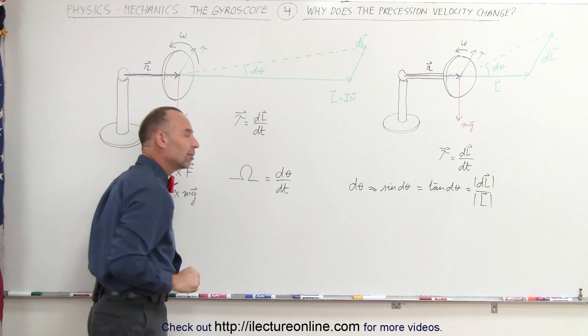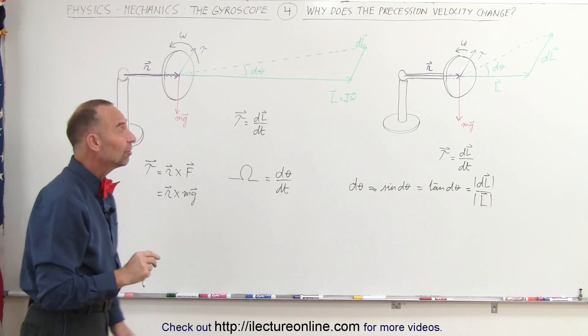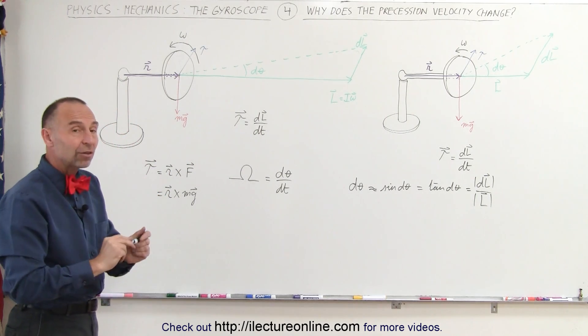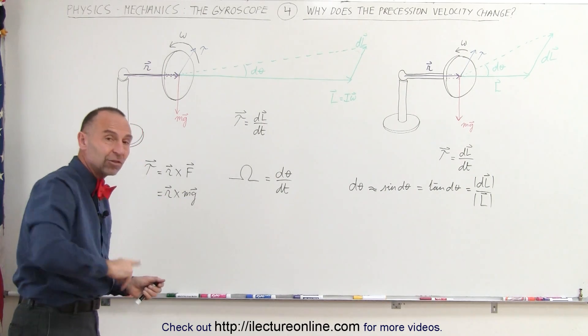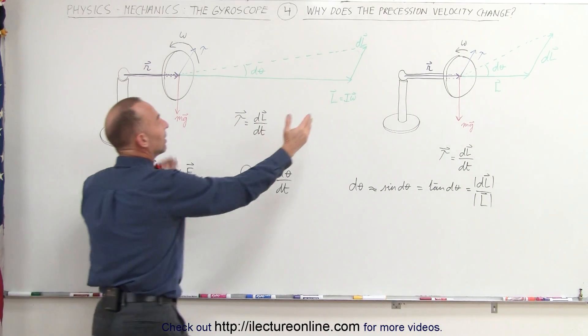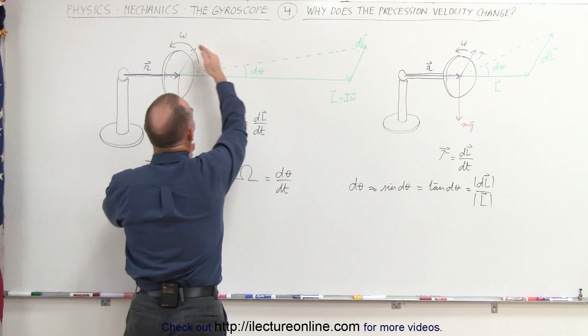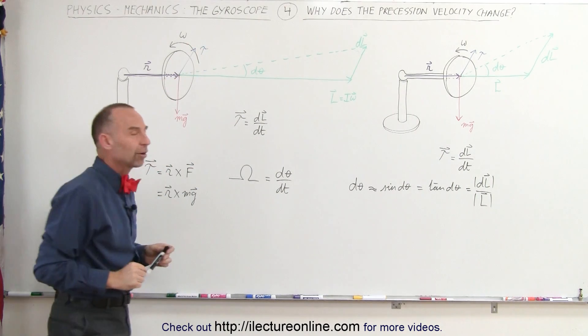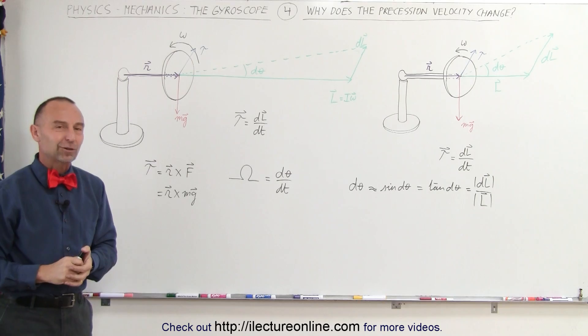And that's the reason why, when you have a gyroscope that's spinning, it'll start precessing faster and faster and faster because the angular momentum decreases as omega decreases due to friction. And that's the key to understanding the gyroscope.